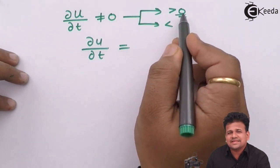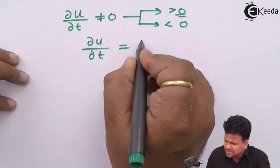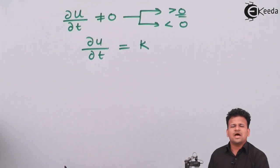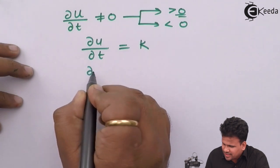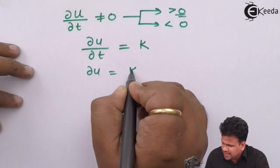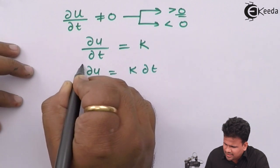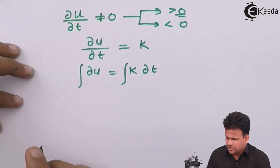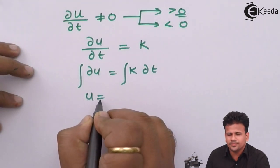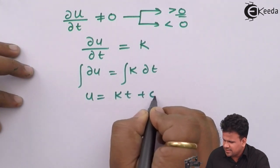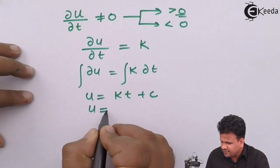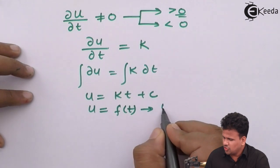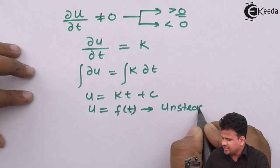If ∂u/∂t is not equal to zero, either it is greater or less. We consider it greater than zero, so ∂u/∂t = K where K > 0. Cross-multiplying: ∂u = K ∂t. Integrating both sides, we get u = Kt + C. This means u is a function of time and is dependent upon time. Hence this flow is called unsteady flow.